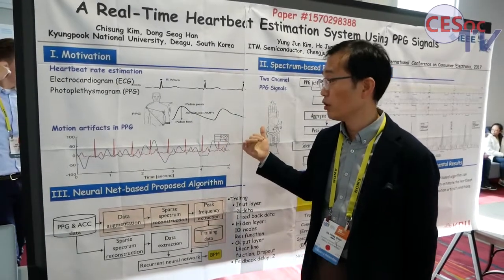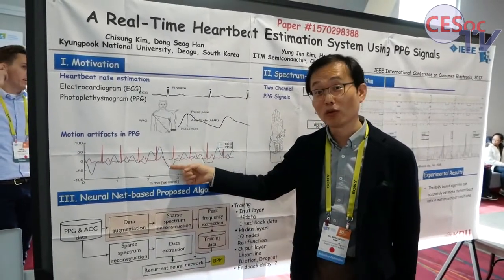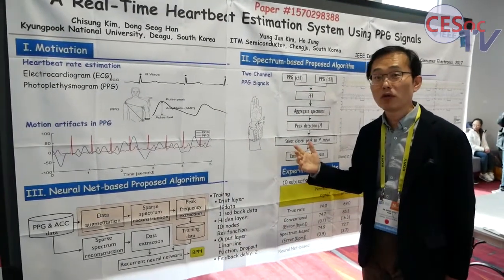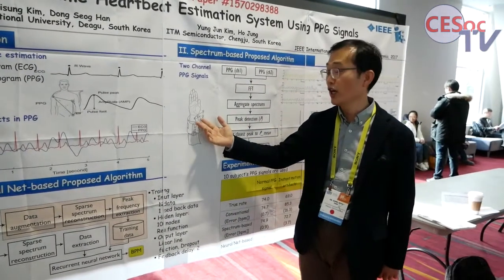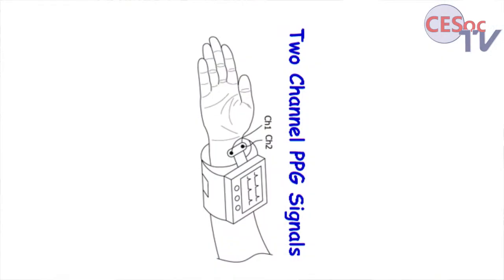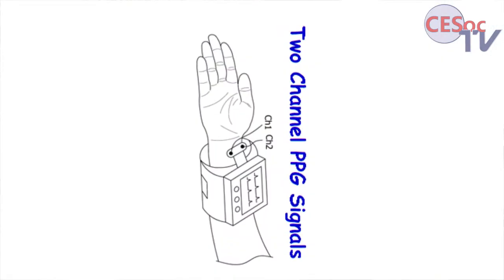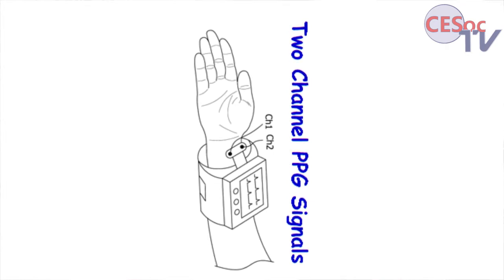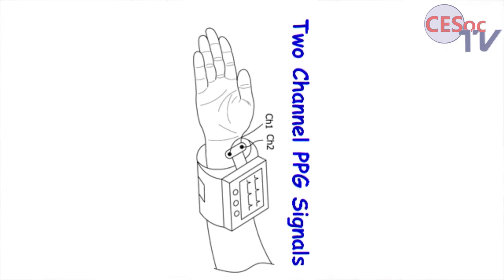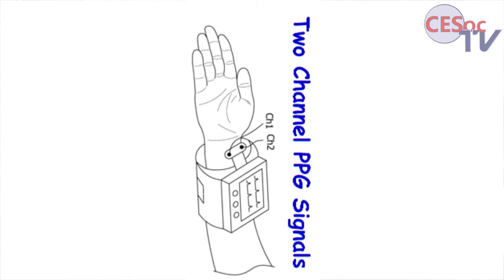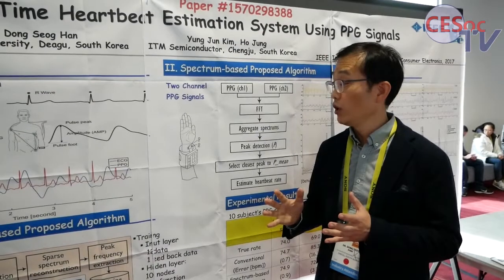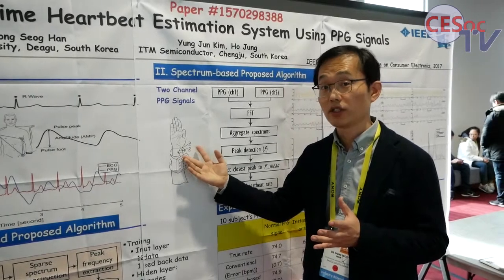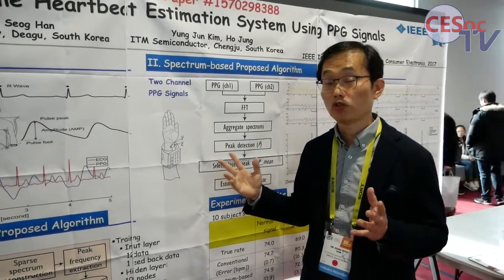Our goal is to obtain those pulses from this noisy signal. My proposal is to add two sensors. In conventional systems, there is only one sensor. The reason why we adopted two sensors is that while we are working or moving, the noise signals will be independent for those two sensors. That is the reason why we adopted two sensors.